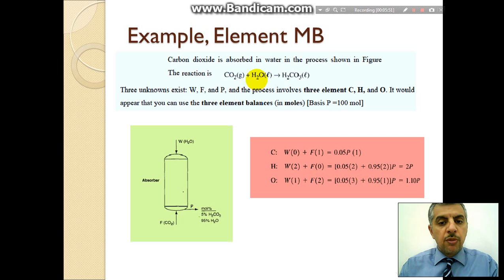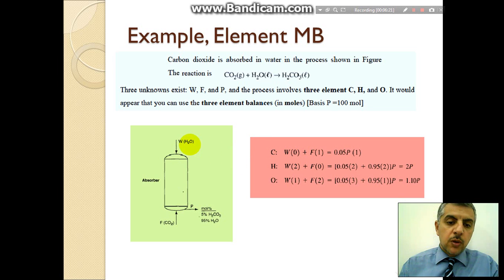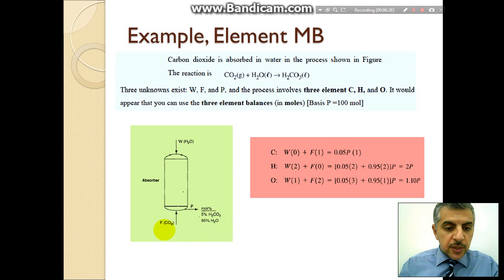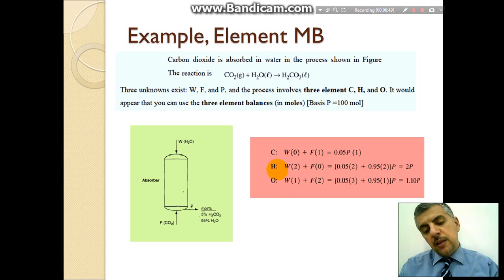For an example of element material balance, consider the reaction of CO2 with water to produce H2CO3 in the liquid phase. We just need information about the materials in and out. For the element carbon: the carbon input with water equals zero because there is no carbon in that stream, plus one times the total amount of stream F equals one times the fraction of this component times the total amount out.